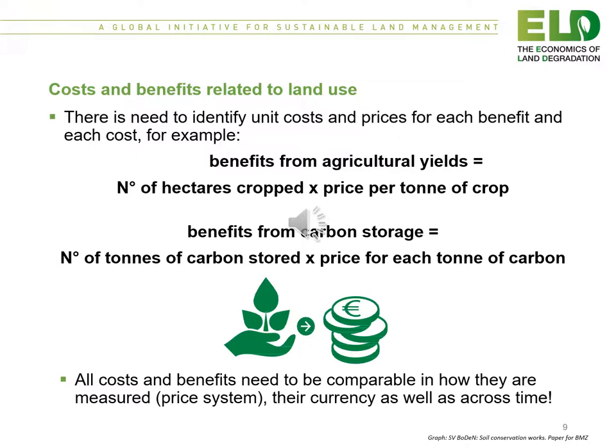There is a need to identify the unit costs and prices for each benefit and each cost. For example, benefits from agricultural yields equal the number of hectares cropped times the price per tonne of crop. Another example: benefits from carbon storage equal the number of tonnes of carbon stored times the price for each tonne of carbon. All costs and benefits need to be comparable in how they are measured, their currency, as well as across time.